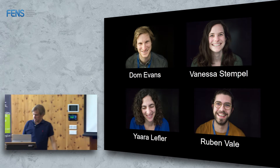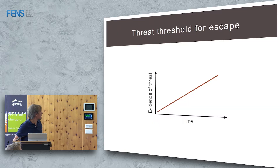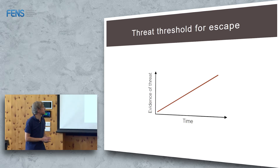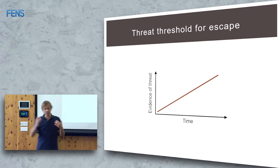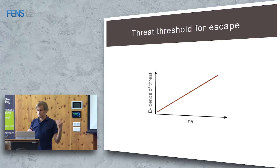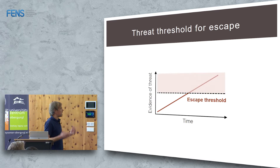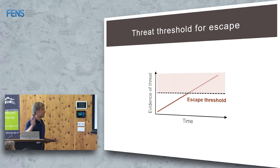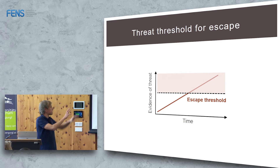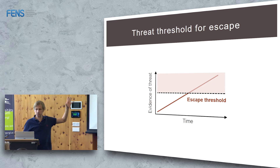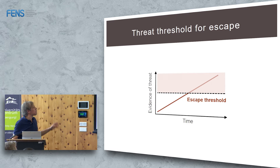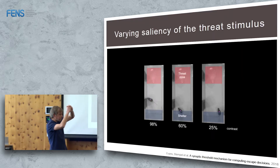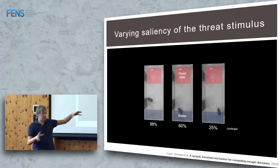We've been primed to think about thresholds and integration. Escape is very complicated, but the simplest model is: when threat gets too high and crosses a threshold, you escape. This is the level two — considering the algorithm for the computation of escape from threat. To probe this, the behavioral assay we've done is to take the looming stimulus in the simplest possible configuration.